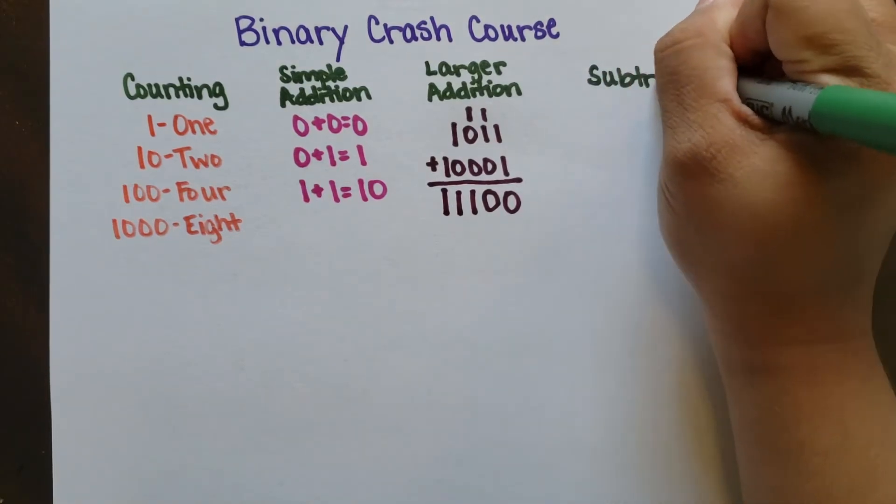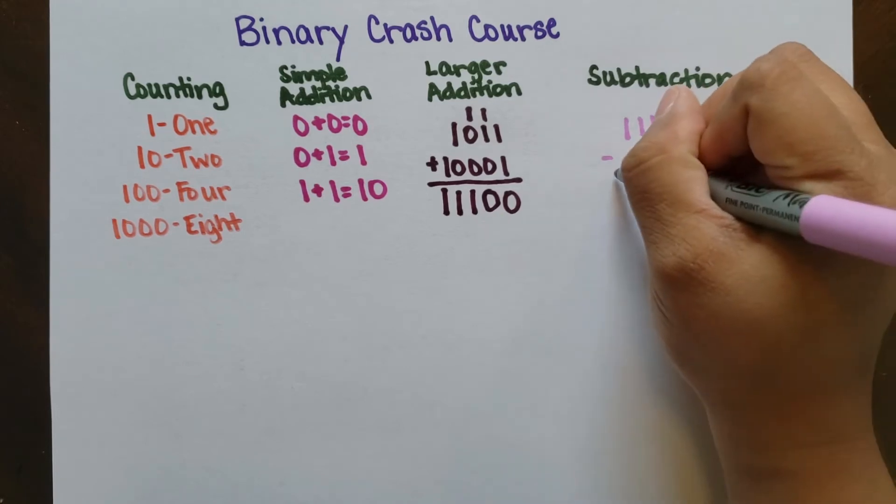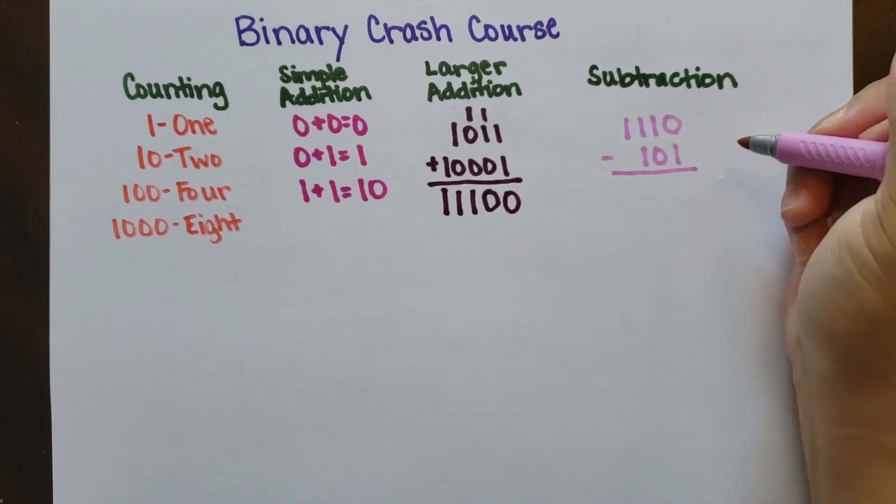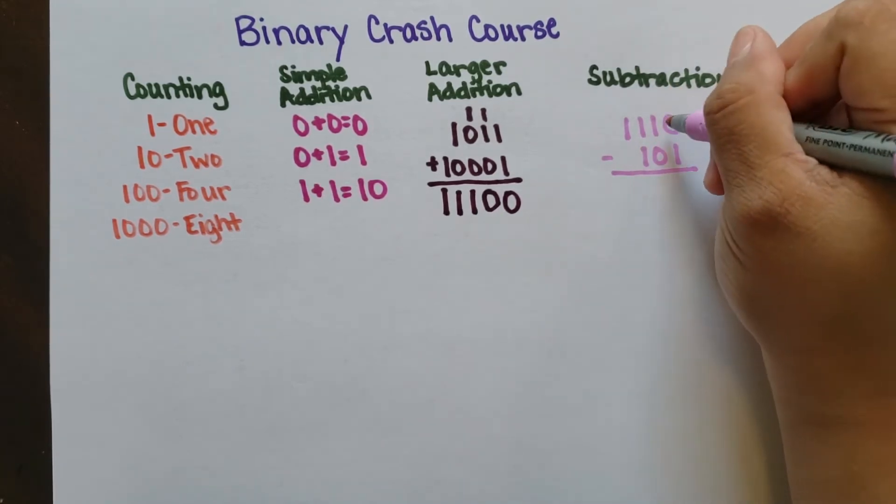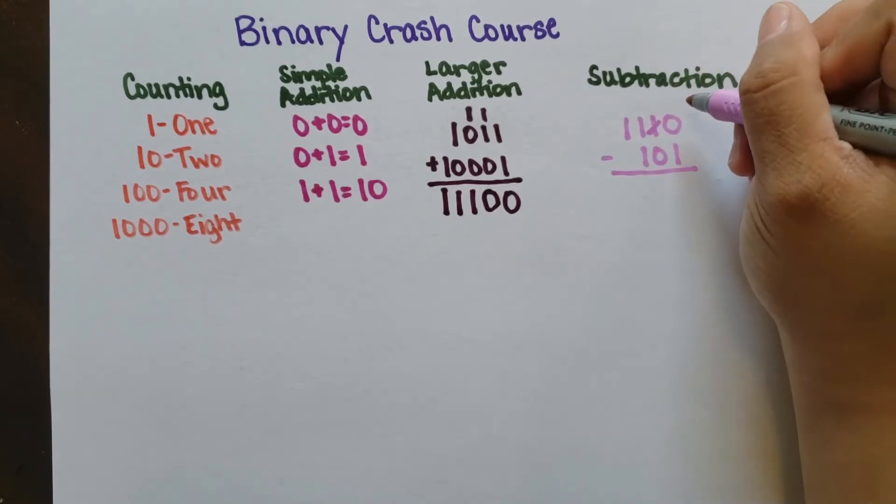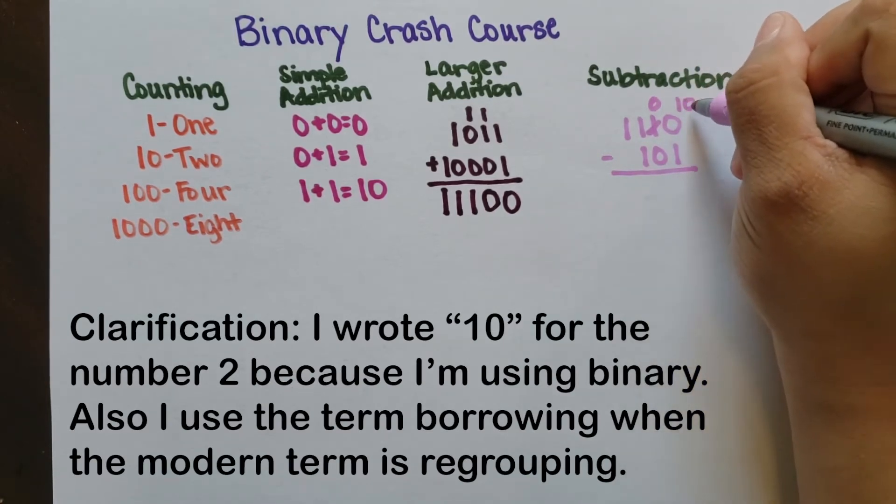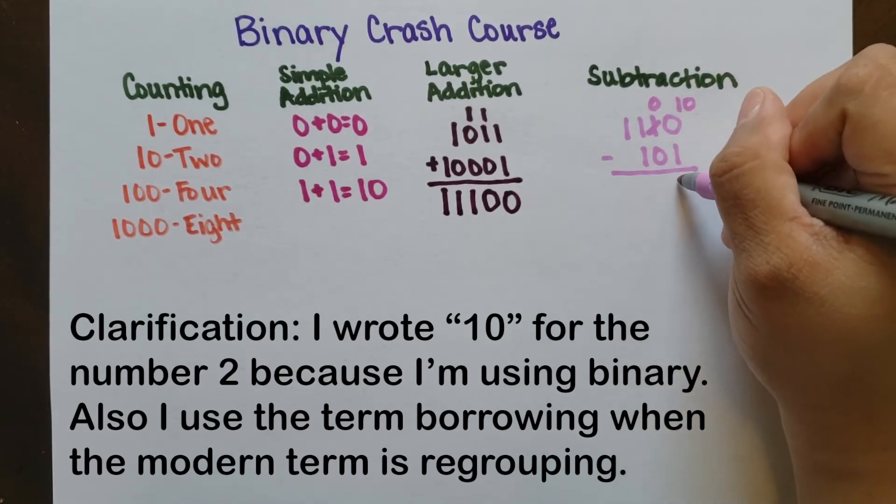So let's look at a subtraction problem. We have 1110 minus 101. When subtracting in binary, there are really only a few scenarios that show up. The most difficult one being the 1 on the far right digit here. 0 minus 1 can't be done, so we have to borrow from the left digit to get 2. And 2 minus 1 gives us 1, and we bring that down.